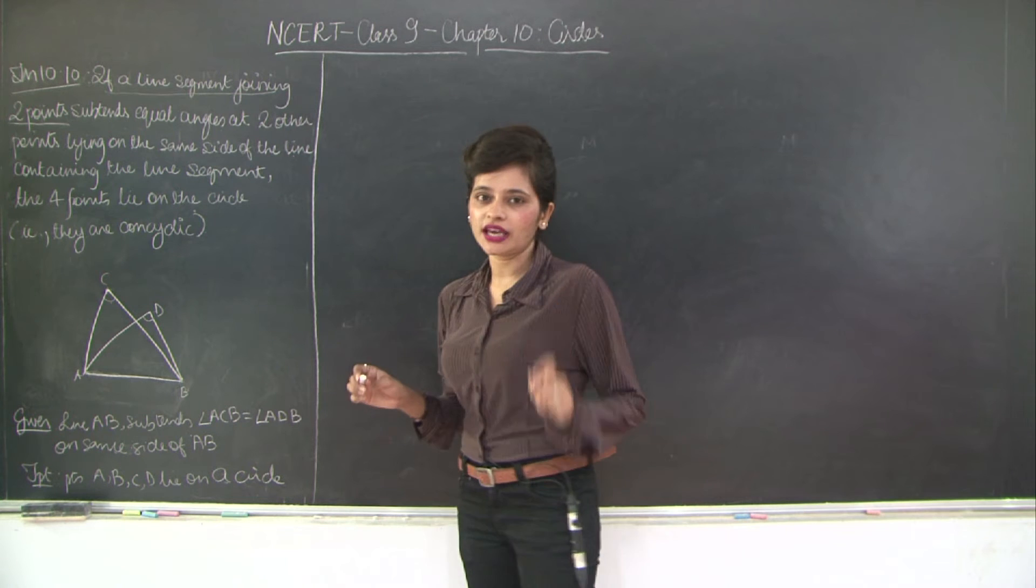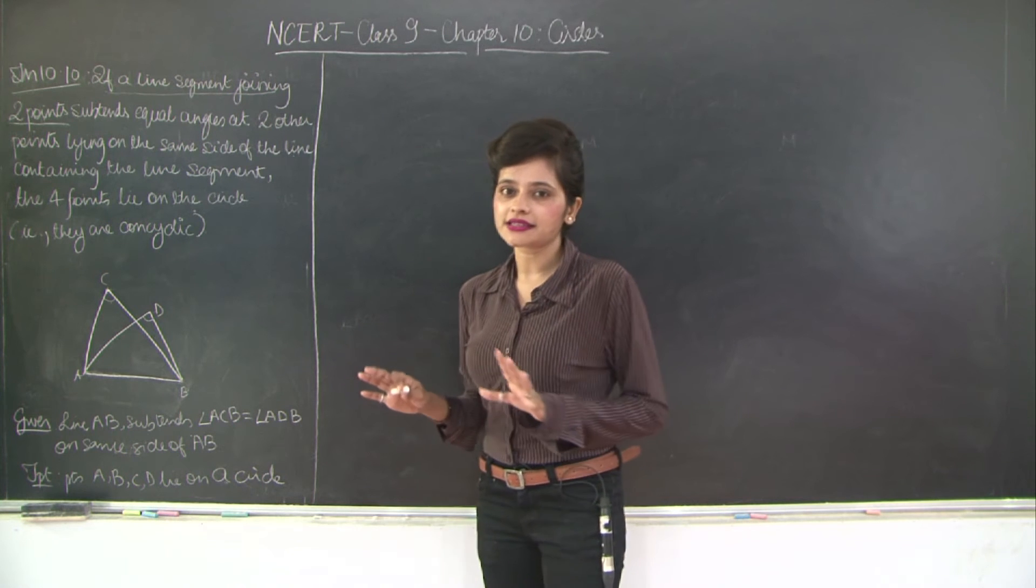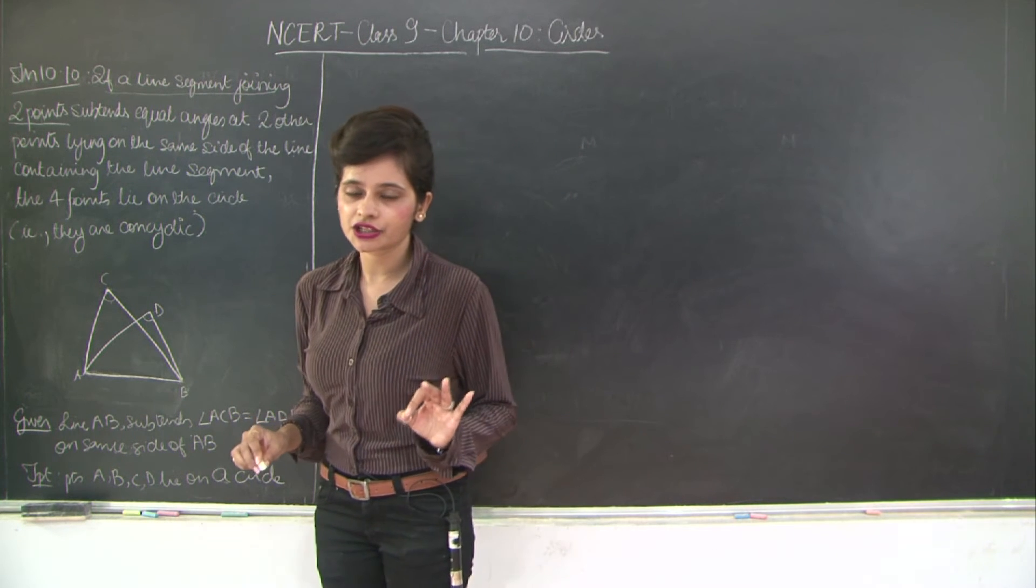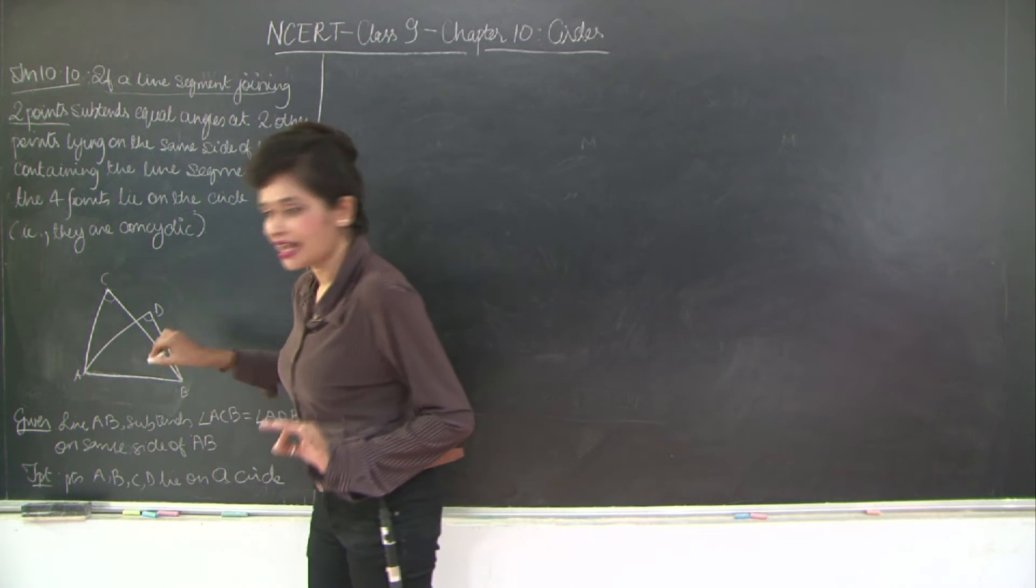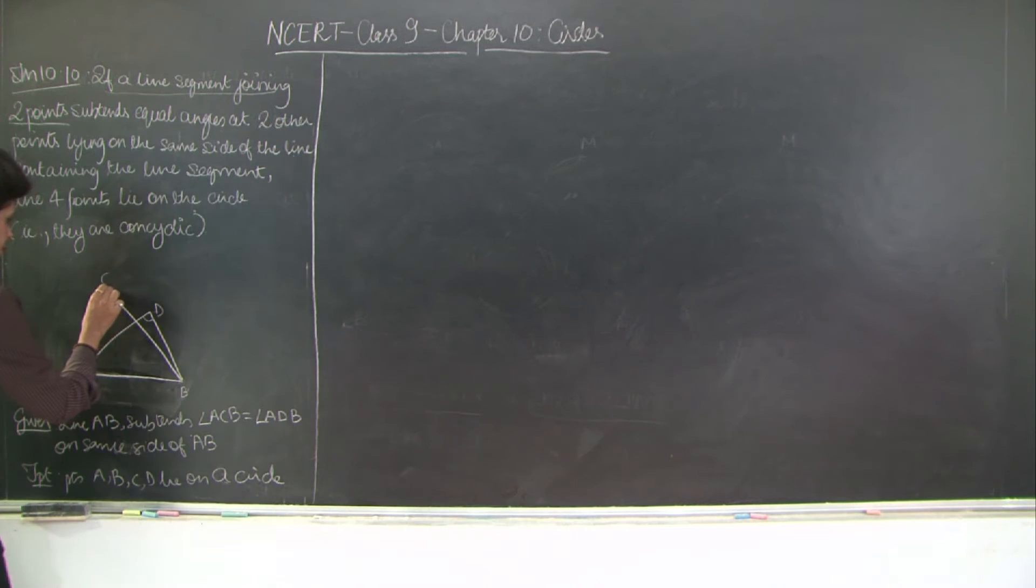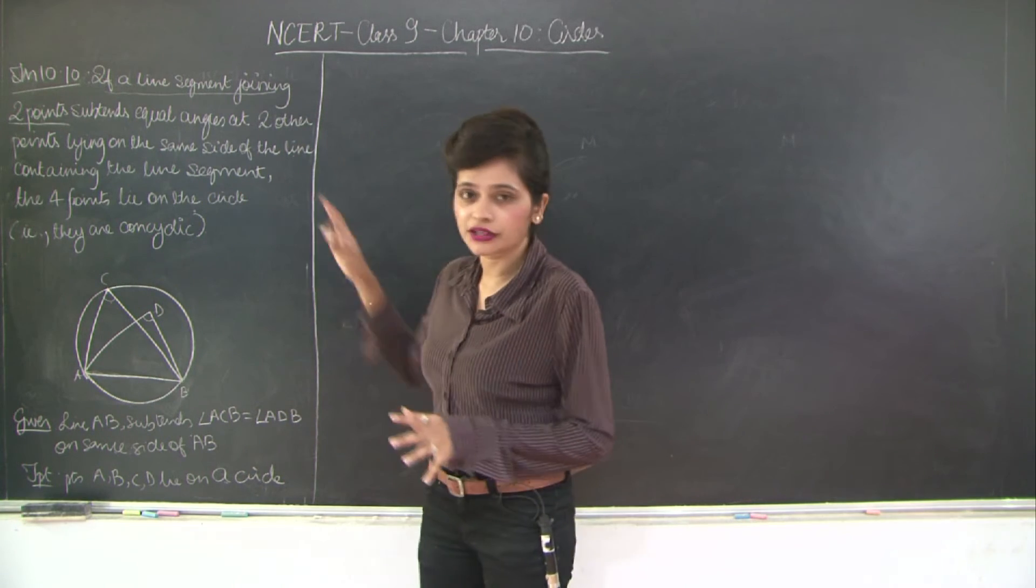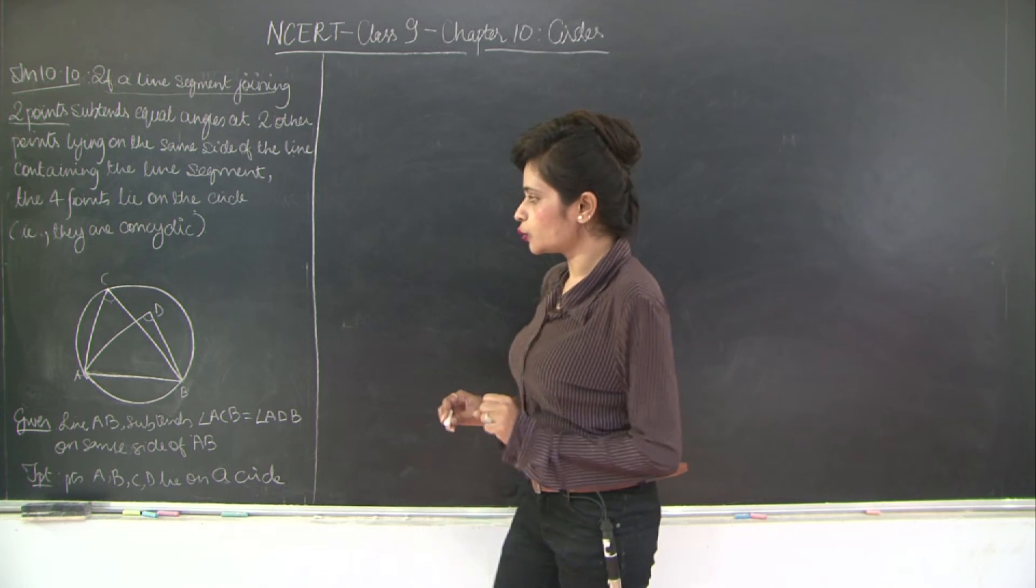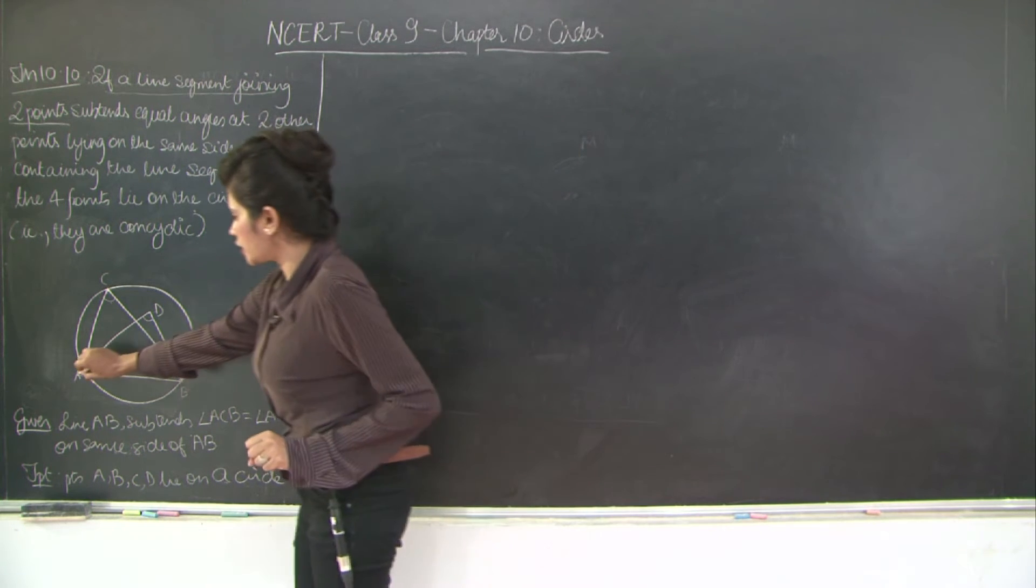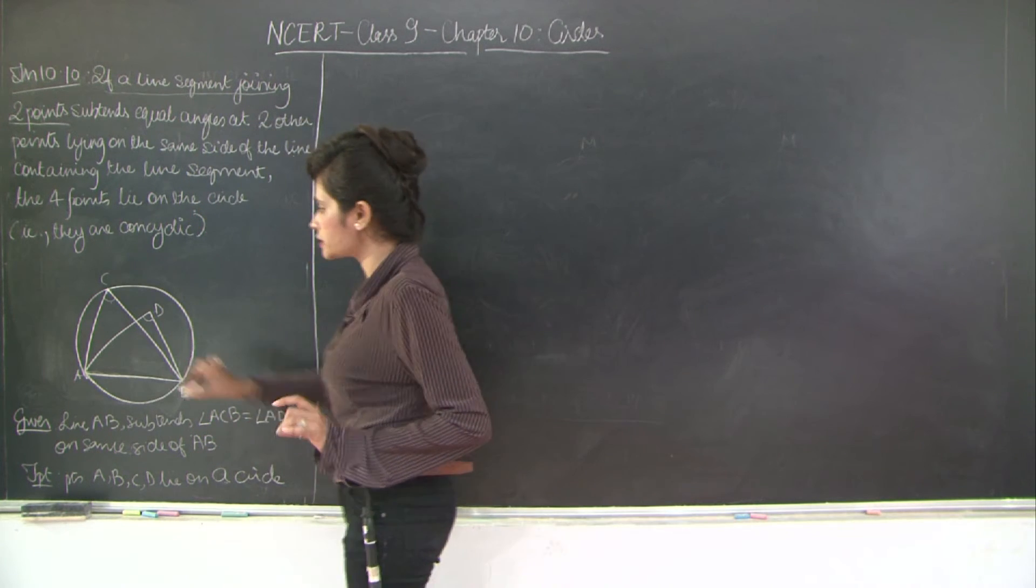What we are going to do is, we have learnt at the start of the chapter that through three given points, three non-collinear points, only one circle can pass through it. So I am going to take into consideration my three non-collinear points as A, C, B and I am going to draw a circle passing through these three points. So let me draw the circle. I am not really making use of a compass or anything right now, I am just doing it freehand. You can do it through freehand also in your exams, especially when you are not asked to do construction.